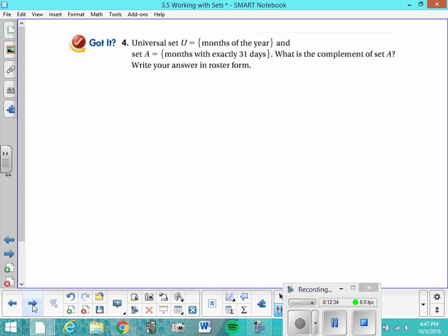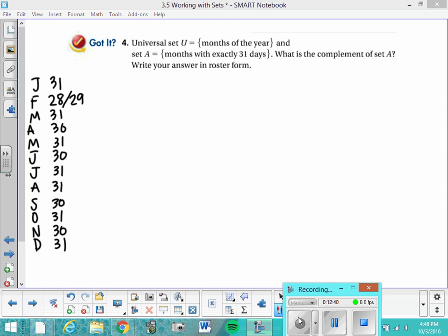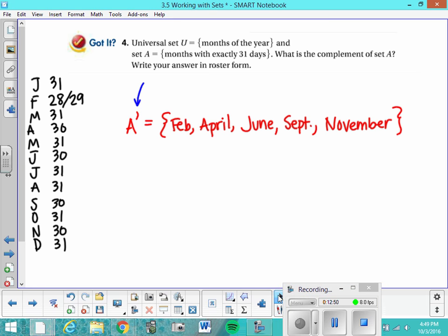So here you go. This is your chance to try it. Press pause, and then when you're finished and happy with your answer, you can press play and check it against my answer. If you're not sure about your months, I just listed them there for you if you need it. So here is my set in rostered form of A prime, which is the complement of set A, and it contains all the months that do not have exactly 31 days. Thanks so much. I'll see you in class tomorrow.